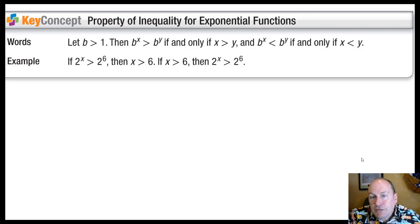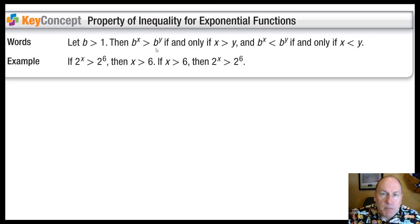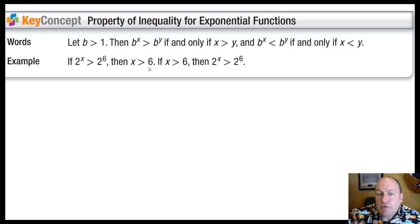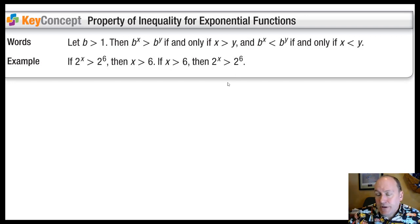Now let's look at exponential inequalities. There's a property of inequality for exponential functions, similar to the property of equality: if the bases are the same, b to the x is greater than b to the y if and only if x is greater than y. The same relationship holds for the powers. For example, if 2 to the x is greater than 2 to the 6, then x is greater than 6, and conversely, if x is greater than 6, then 2 to the x is greater than 2 to the 6.